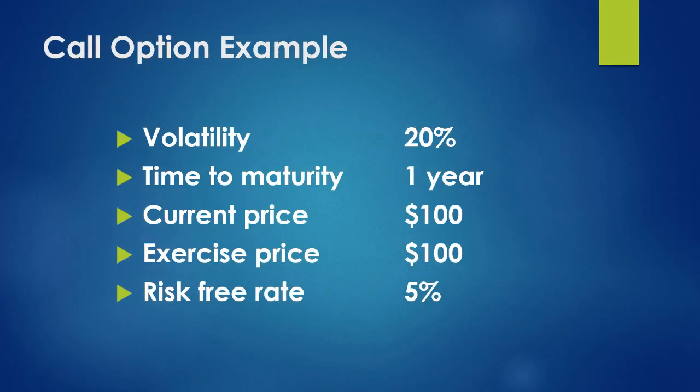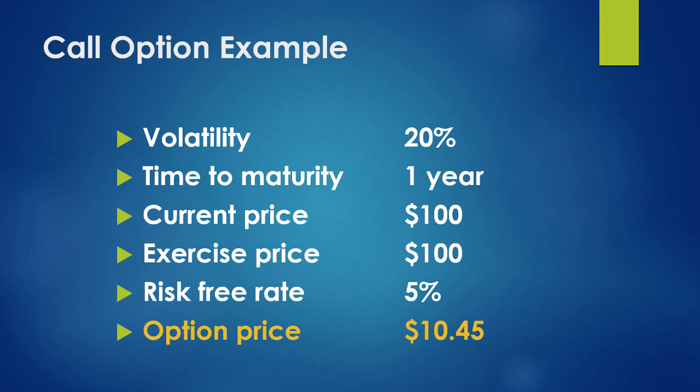Let's plug in some actual numbers to give you an idea of how this calculation works. For volatility: 20%. For time to maturity: one year. For current price: $100. For exercise price: $100. For risk-free rate: 5%. And we're going to say this is an option to buy stock. If you plug these variables into a calculator, the option is worth $10.45. The option to buy $100 worth of stock a year from now is worth around $10 — that's the right to buy something, and that's very powerful information.